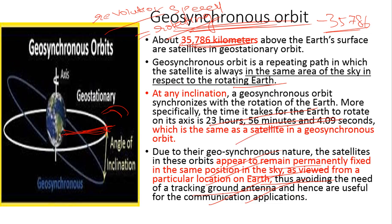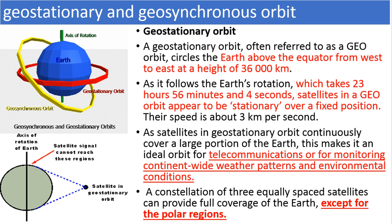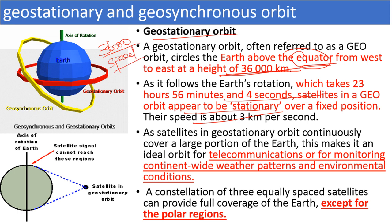Now we will see about geostationary orbit. If a satellite is placed above the earth's surface at a height of approximately 36,000 kilometers, above the equator, and the rotating speed of the earth matches the revolving speed of the satellite, then it is said to be in geostationary orbit. So in geostationary orbit: the satellite is placed approximately 36,000 kilometers above the earth's surface, the revolution speed of the satellite equals the rotating speed of the earth, and the satellite is placed above the equator.